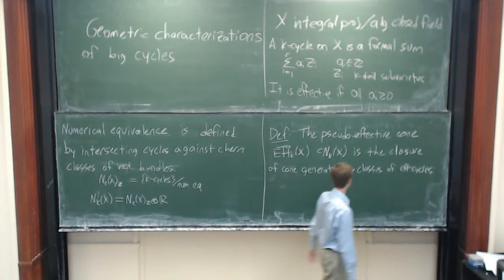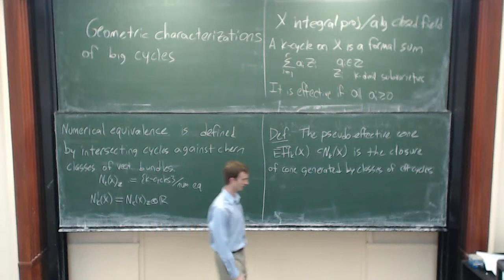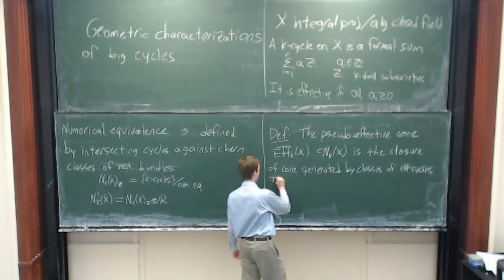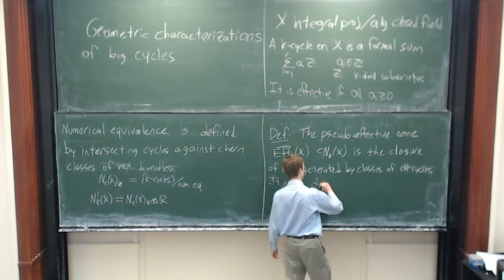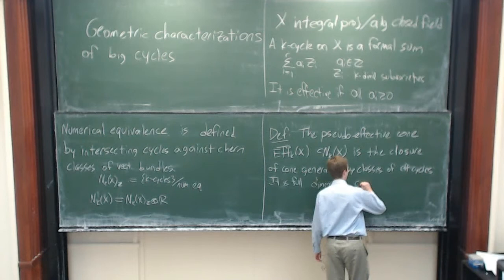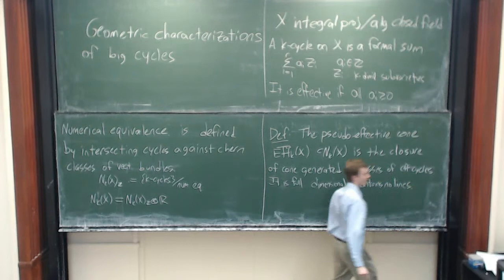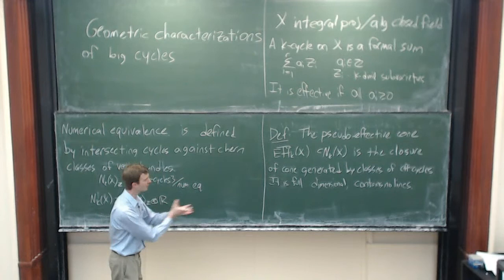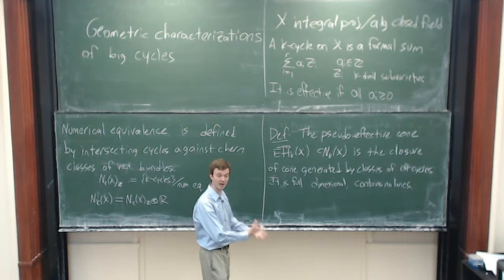The pseudo-effective cone is full-dimensional, basically by definition, and it contains no lines — this is the key point. When you have a pointed cone in a vector space, you can think of it as choosing out a positive direction. The study of pseudo-effectivity is known as positivity of cycles, which is what we're going to be studying.